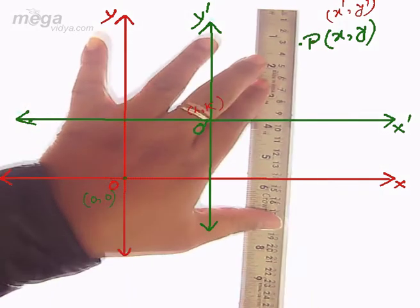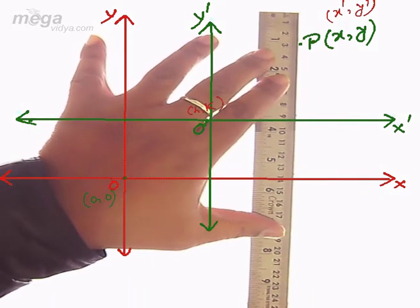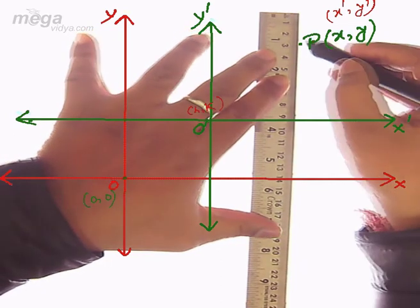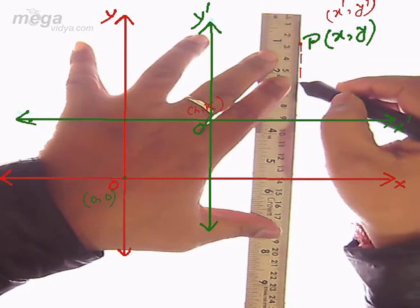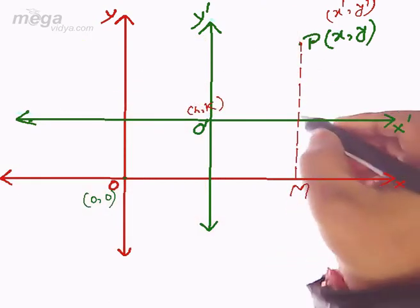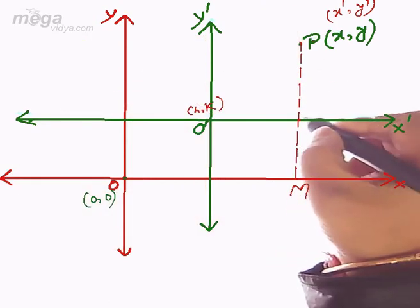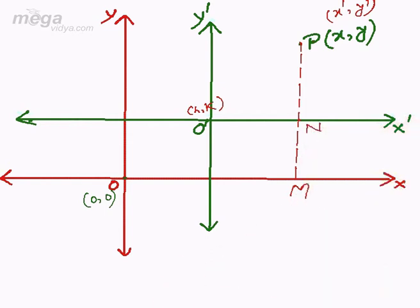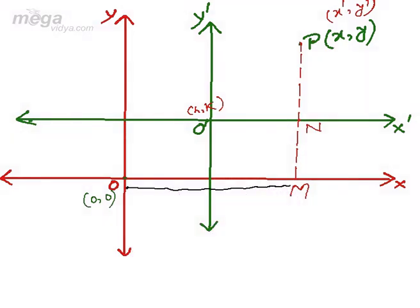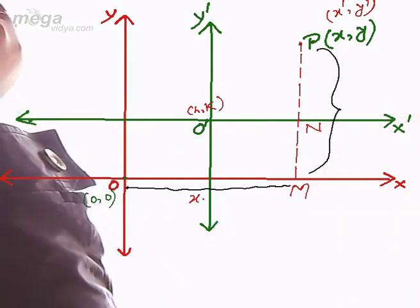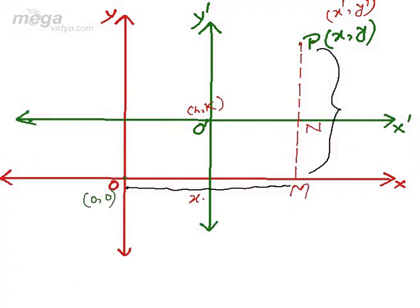If you draw the perpendicular from P on X and X-dash, suppose it intersects the X axis at the point M and it intersects the X-dash axis at the point N. In that case, this whole length from O to M becomes X.